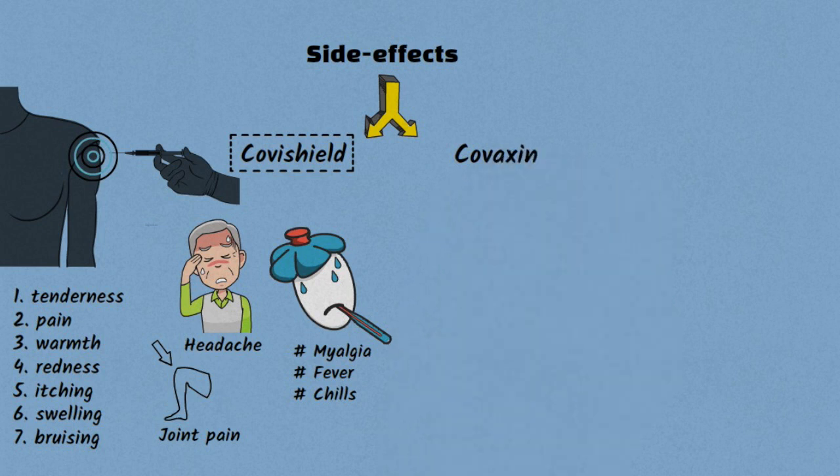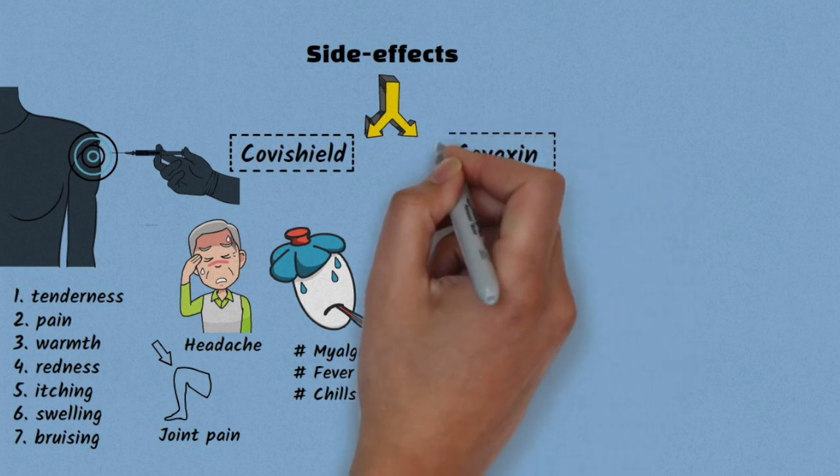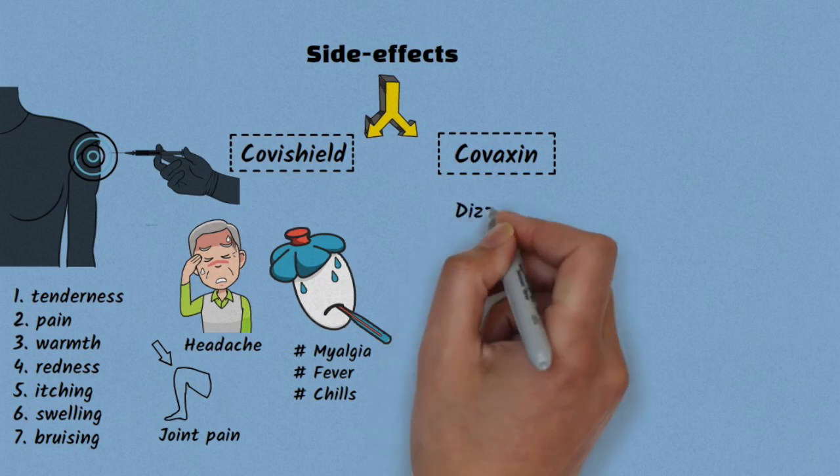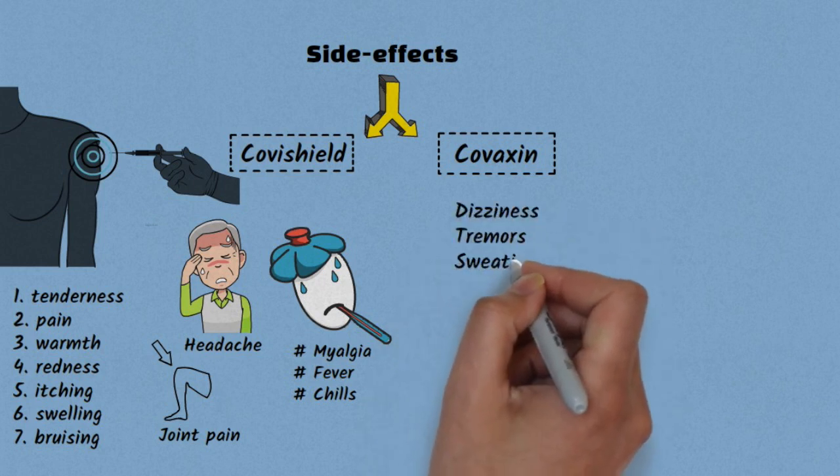Side effects caused by Covaxin are similar to those of Covishield with a few more side effects like dizziness, tremors, sweating, cough, and cold.